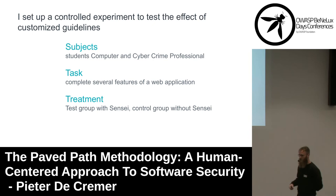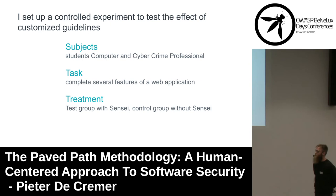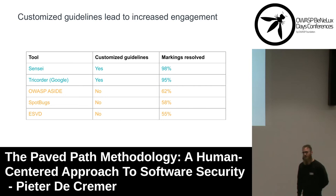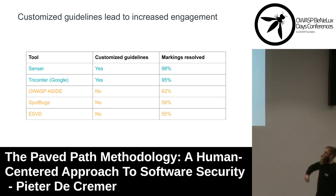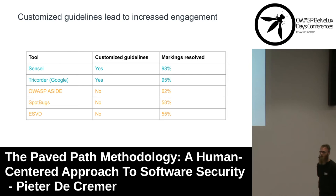I set up a controlled experiment with students in the computer and cybercrime professional program in Bruges. Their task was to complete several features of a web application — some received help from Sensei, and others had Sensei installed only to monitor their behavior. Comparing this to other tools that did similar research, I found that Sensei and Tricorder — tools that customized guidelines and tuned them to the specific project — have a larger increased engagement compared to other tools using generally applicable rules, such as OWASP ASIDE, SpotBugs, and early security vulnerability detectors. There is quite a clear gap: with Sensei and Tricorder, almost all markings are addressed.